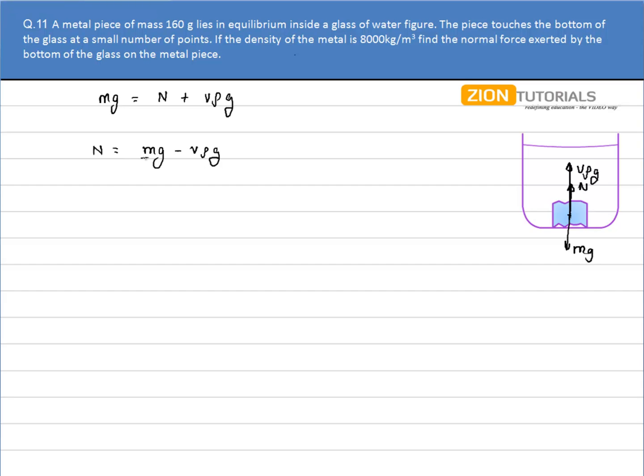M is the mass of the metal given as 0.160 kg into 9.8 minus V. V is the volume of the metal. So it can be written as mass of the metal divided by density of metal into density of water into g. So I have 0.160 into 9.8 minus mass is again 0.160 divided by 8000 into 1000 into 9.8.